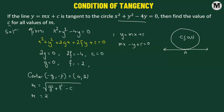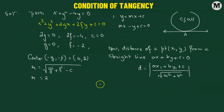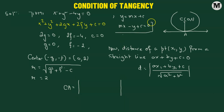We use the formula for the distance of a point from a straight line. If we have a point with coordinates (x1, y1), its distance from the straight line ax plus by plus c equals 0 is given by the absolute value of ax1 plus by1 plus c, divided by the square root of a squared plus b squared. We join point C and point A, so the distance CA is the distance of the center from the tangent line.